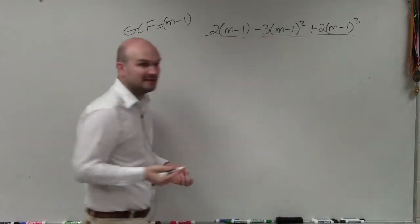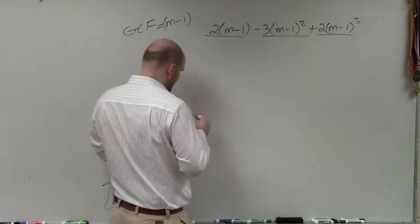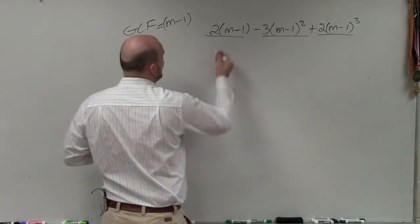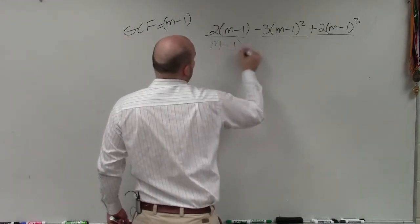The numbers 2, 3, and 2 do not have any common factors. So therefore, all I'm simply going to do is divide m minus 1.